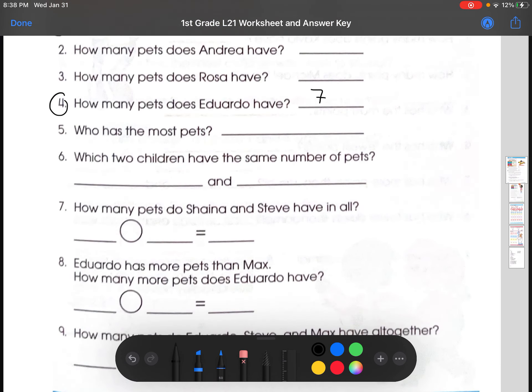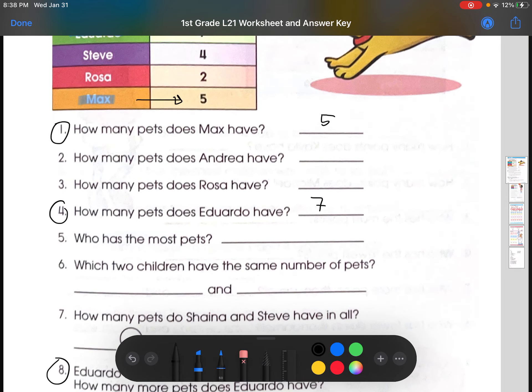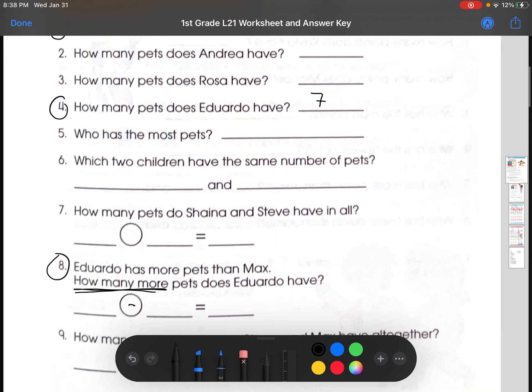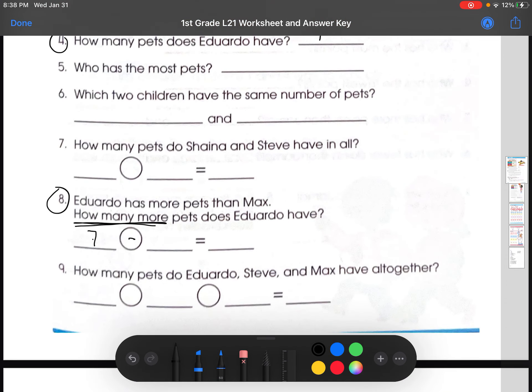So, let's just do one more. Let's do number eight. Eduardo has more pets than Max. How many more pets does Eduardo have? So, first, how many more? That's a subtraction question. So, the sign inside would be a minus. And then, Eduardo has more. And we know the number of pets Eduardo has. It's seven. And Max has five pets. So, the bigger number goes in the front. So, seven minus five, which is two.